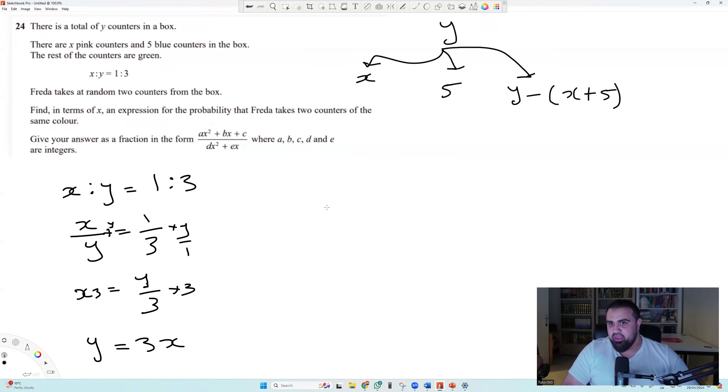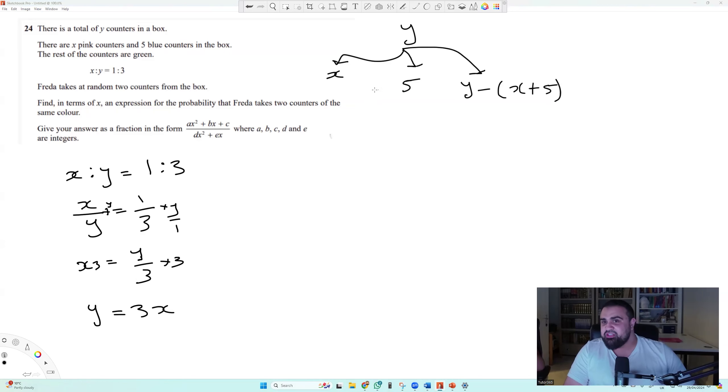And then they tell us the ratio of X to Y counters is equal to one to three. So remember when we have a ratio question like this, straight away you should be doing something like this. So X to Y can be written as one over three, where X is one and Y is three.